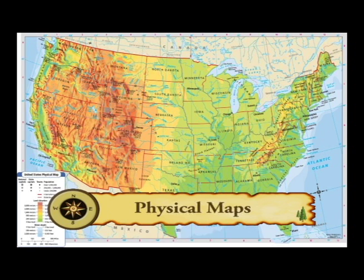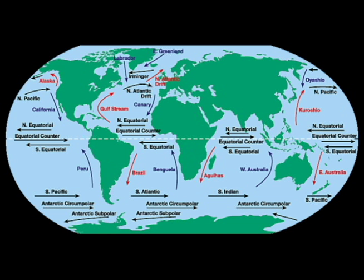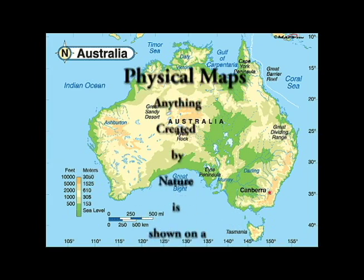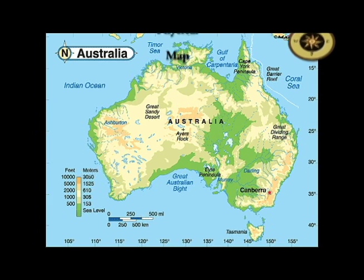Political maps show roadways and all other human-made features. Pretty much any map focused on human activity or human features is a political map. Physical maps show the land formations and water on earth's surface — they show mountains, valleys, plains, oceans, rivers and lakes. A good way to know if you're looking at a physical map is to think of nature. If it is showing natural aspects, you're looking at a physical map.